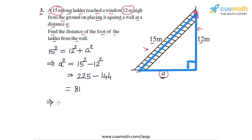So a square is equal to 81 and this means that a is equal to root of 81 which is equal to 9.